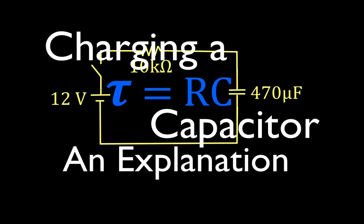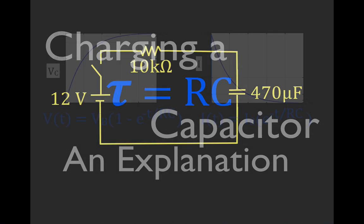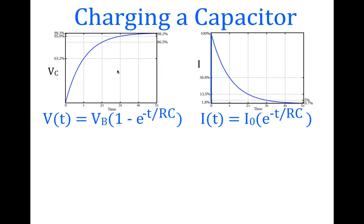In today's video I'm going to go over an explanation for charging a capacitor in a simple RC circuit. I want to cover three things: how we calculate the voltage across the capacitor with respect to time, how we calculate the current through the circuit with respect to time, and to give a good conceptual understanding of what the time constant is — tau equals R times C — using these two graphs.